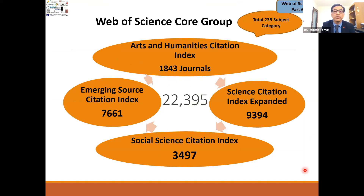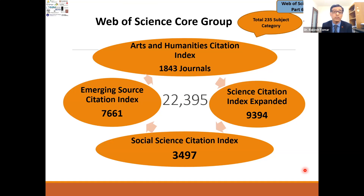The Web of Science Core Collection has four indices: Arts and Humanities Citation Index, Emerging Sources Citation Index, Science Citation Index, and Social Sciences Citation Index. There are a total of 235 subject categories and approximately 22,395 journals in the Web of Science core collection, though this data is from about a year ago and may have changed.